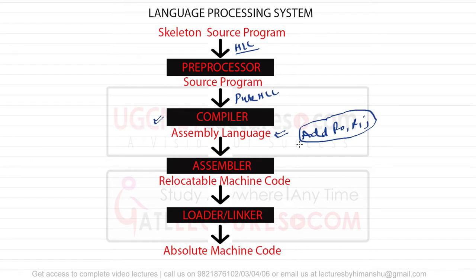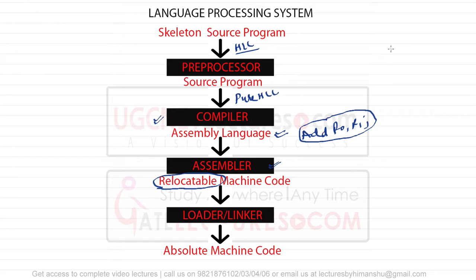This assembly language code is clearly dependent on the architecture of your system, or you can say the architecture of your processor, because different processors may support different kinds of instructions. So the assembly language code is machine-dependent or processor-dependent. This assembly language code is then given to the assembler, which will produce a relocatable machine code.